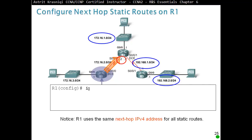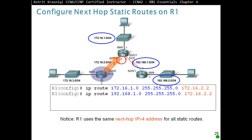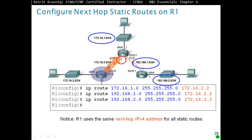On this example, notice that R1 will use the next hop IP address for all static routes. For example, any static route created on R1 uses the IP address of Router 2 as the next hop. So: 172.16.2.0 — to get to 172.16.1.0 with mask 255.255.255.0, use next hop IP address 172.16.2.2. To get to the 1.0 network, use the same next hop IP address. To get to network 192.168.2.0, use the same next hop IP address.